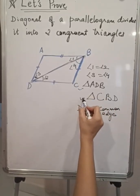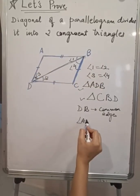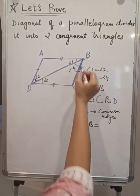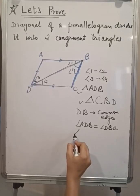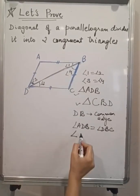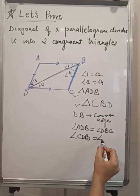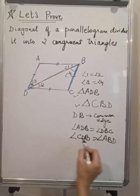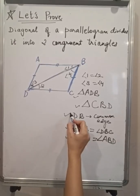Angle ADB is equal to angle CBD, and angle CDB is equal to angle ABD. Two angles are equal and there is a common edge.